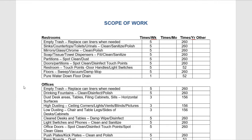On the next page we have our scope of work — the tasks we will perform in your facility. It is a five-day-per-week service. In the restrooms, you can see a majority of tasks are done five days per week, and one day per week we will pour water down the floor drain to eliminate odors that come from the drain when it dries out.